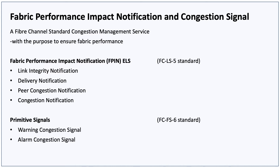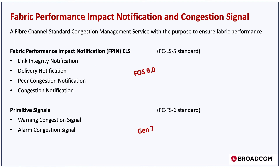In addition, defined in the Fibre Channel FS6 Standard, there are two FC Primitive signals: Warning Congestion Signal and Alarm Congestion Signal. Brocade supports the FPIN notifications with FOS S9 and onwards, and link signals with all Gen7 platforms.